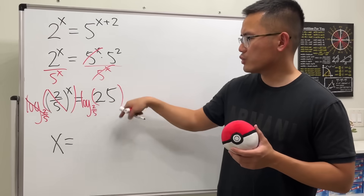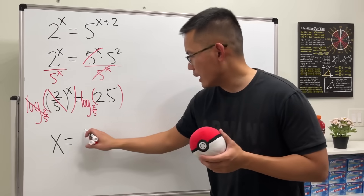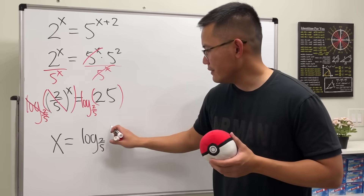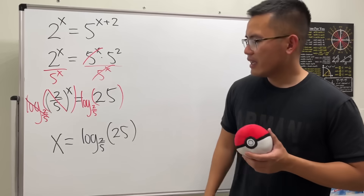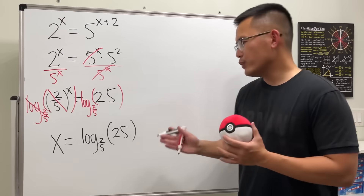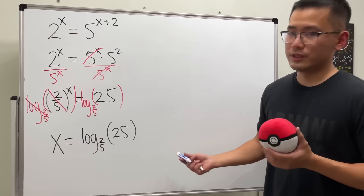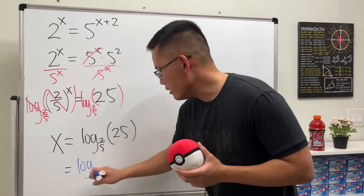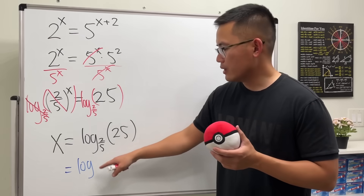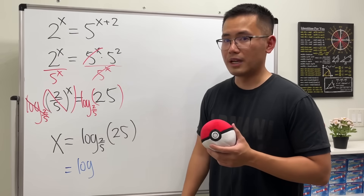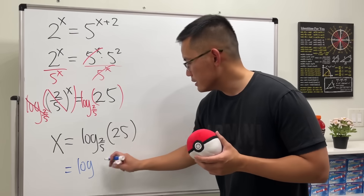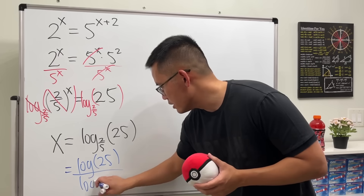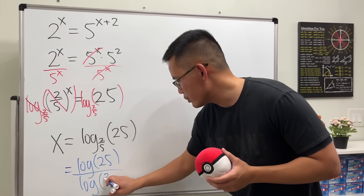And that's equal to — we can write it down like this. Log base 2 over 5, and then the input is 25. If you want to simplify this a little bit, I suggest doing the following. This is equal to log, and we can use log or ln — up to you. We can use the change of base formula: log of 25 over log of 2 over 5.